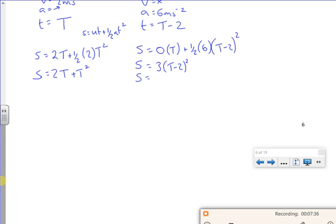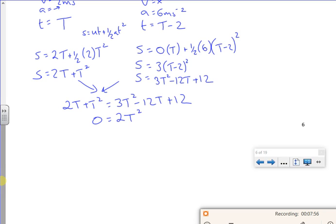Now that's going to be 3T squared minus 4T, so it'll be minus 12T, plus 4, so it'll be plus 12. Now these are the same because it's the same distance. So 2T plus T squared is 3T squared minus 12T plus 12. So 0 is 2T squared minus 14T plus 12. That gives me T is 1 or T is 6.